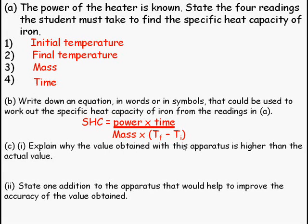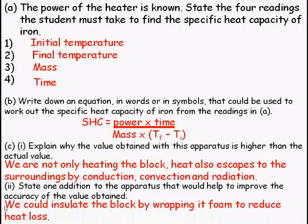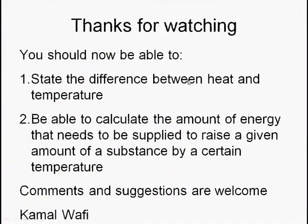Explain why the value obtained with this apparatus is higher than the actual value. Because it's not well insulated, the temperature rise is less, so you need more energy for a temperature change. Heat escapes to the surroundings by conduction, convection and radiation. State one addition to the apparatus that would help to improve the accuracy obtained. You could insulate the block by wrapping it in foam to reduce heat loss.